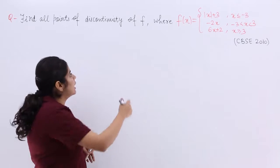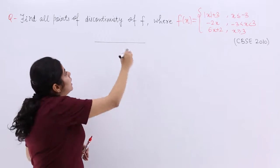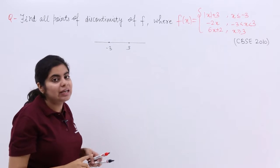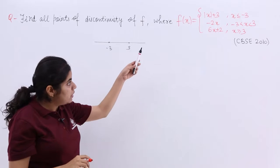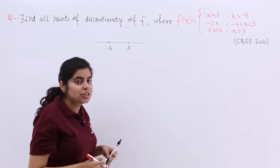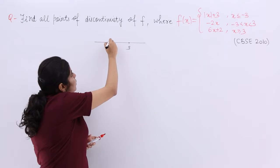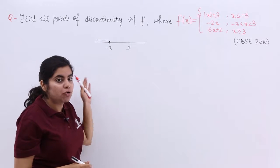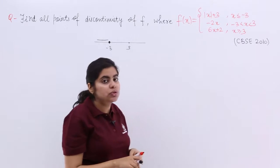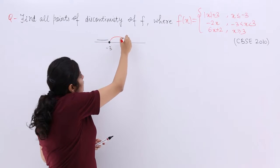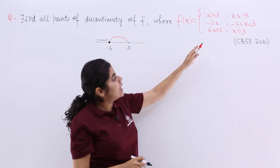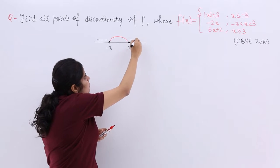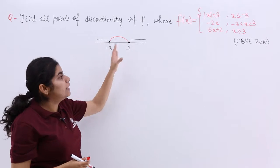This function is a bit more complex. The boundary points are -3 and 3, giving us different categories. When x ≤ -3, the function is |x+3|, covering everything to the left of -3. Next is the range -3 to 3. Then x ≥ 3, which includes 3 and everything greater. So these are our three categories.